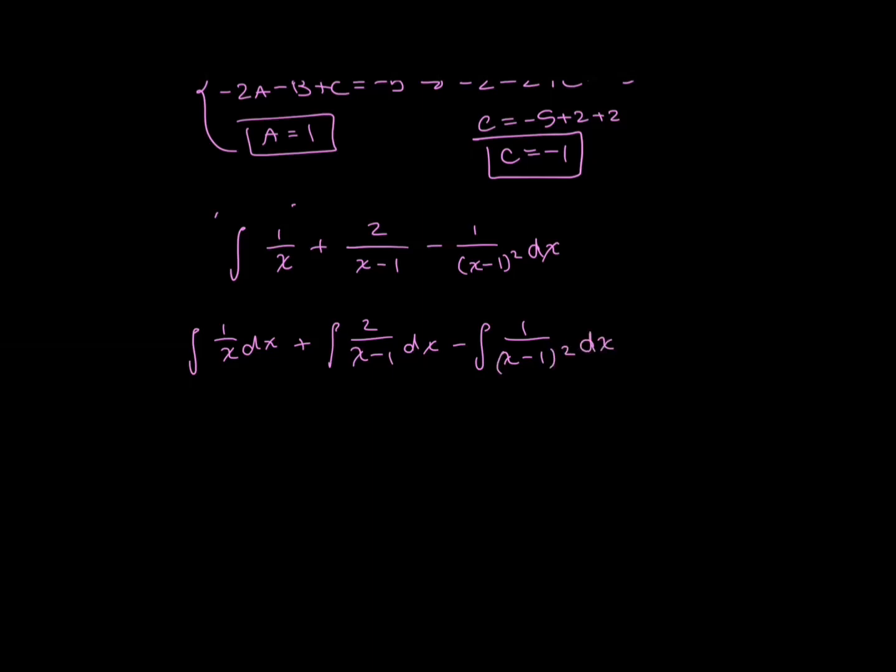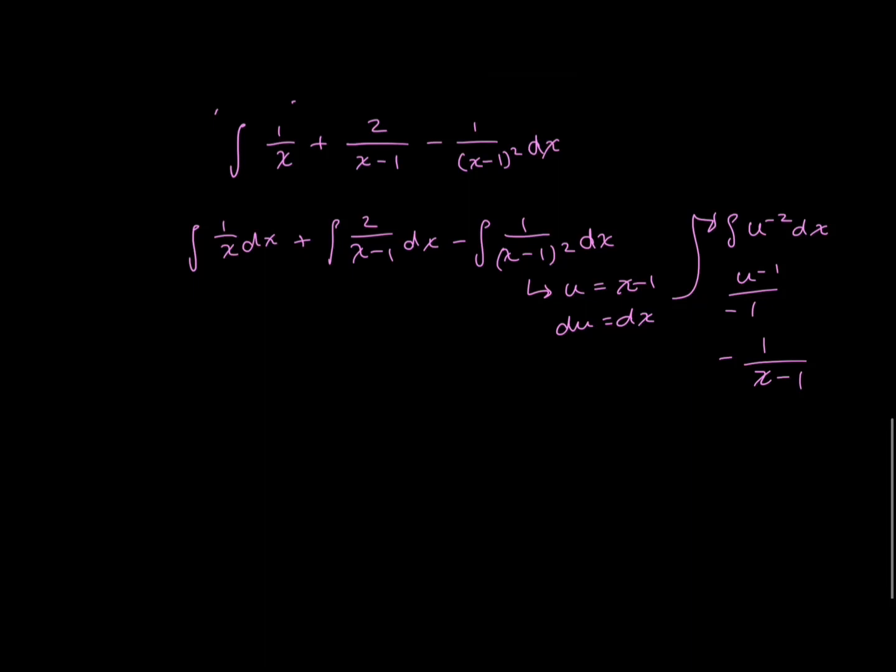All of these are pretty simple to solve, except for the last one, you're just going to have to do a quick u sub, where u is equal to x minus 1, du is equal to dx, and then this goes to 1. This is an integral of u to the power of negative 2 dx, so that this is rewritten as u to the negative 1 of negative 1, or negative 1 over x minus 1.